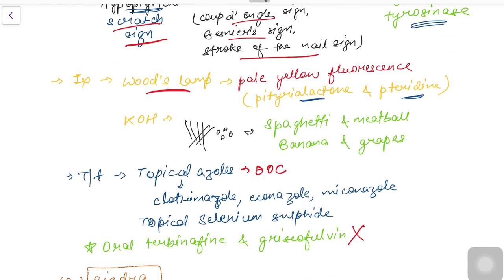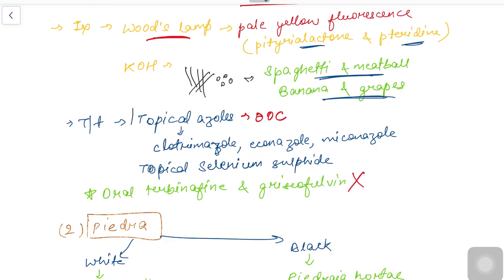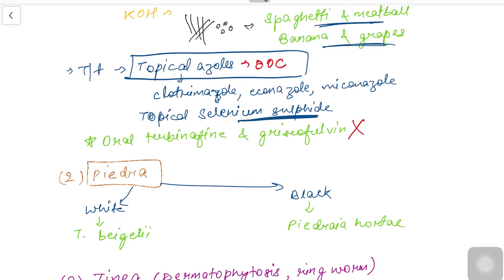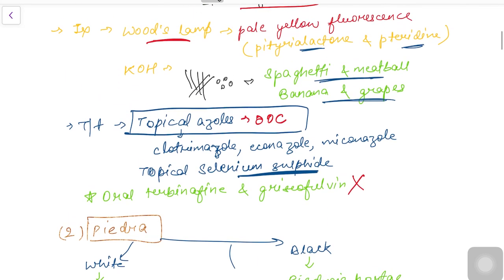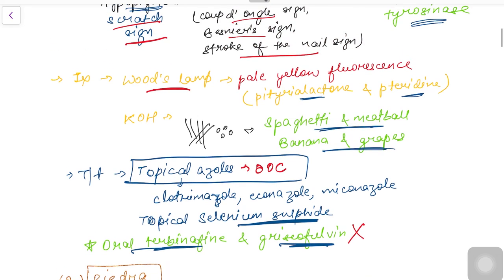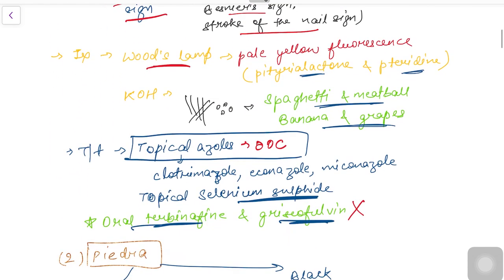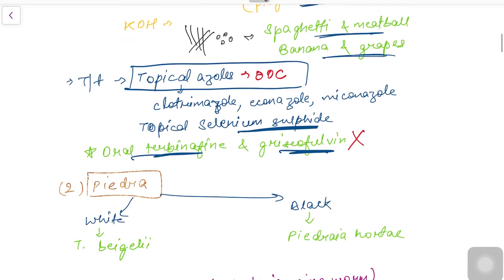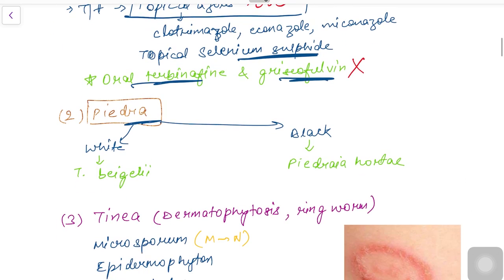KOH mount is very important and very characteristic — in Pityriasis versicolor it gives a spaghetti and meatball appearance, also described as banana and grapes appearance. For treatment, the drug of choice is topical azoles — clotrimazole, econazole, miconazole among others. Topical selenium sulfide is also used. Importantly, oral terbinafine and griseofulvin are NOT useful for Pityriasis versicolor — just remember that.